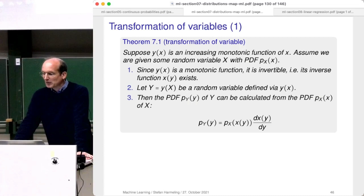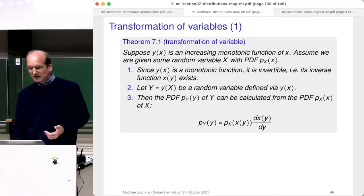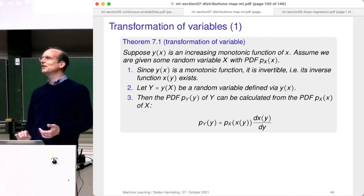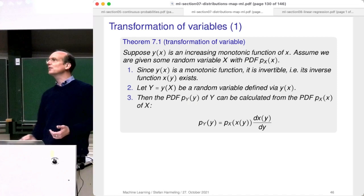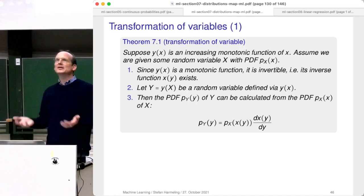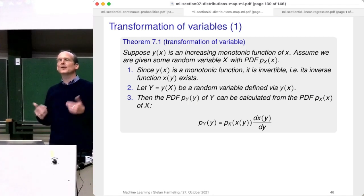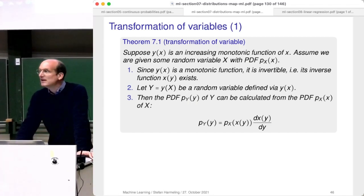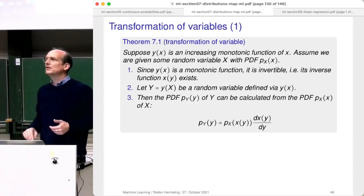You may have seen this formula with vertical bars — the absolute value — which is the more general form. I'm assuming here a monotonic increasing function, where the derivative is always positive. If it were a decreasing monotonic function, the absolute value of the derivative would change the sign, since we only care about the magnitude.